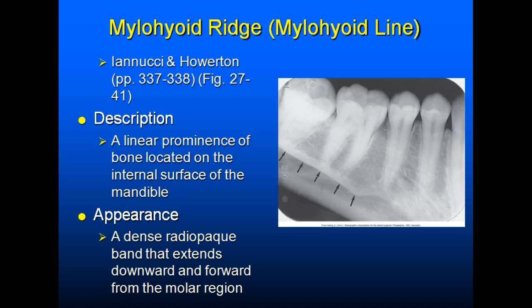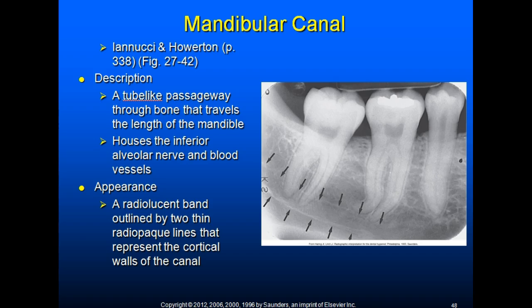The mylohyoid ridge, or mylohyoid line, extends from the molar region downward and forward toward the lower border of the mandibular symphysis. It may appear continuous with the internal oblique ridge and appears as a dense radiopaque band extending downward and forward. This is the attachment for the mylohyoid muscle. The mandibular canal is a tube-like passageway through the bone that travels the length of the mandible, housing the inferior alveolar nerve and blood vessels. It appears as a radiolucent band outlined by two thin radiopaque lines representing the cortical walls, extending from the mandibular foramen to the mental foramen.